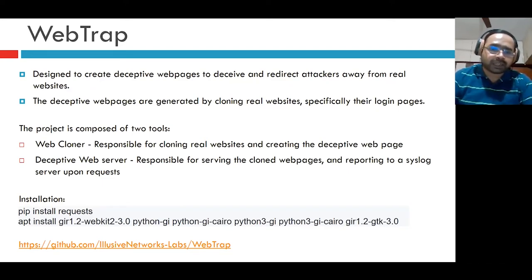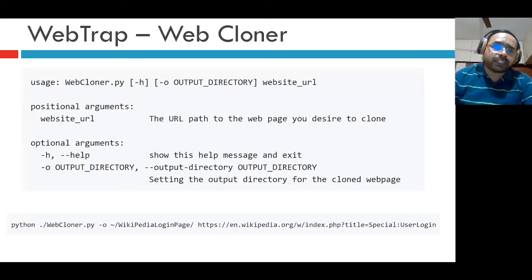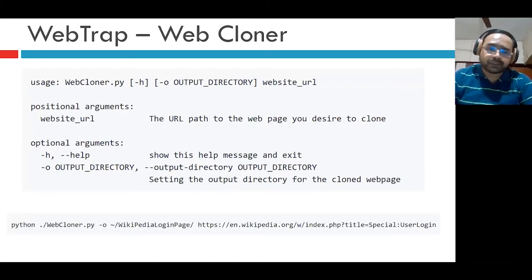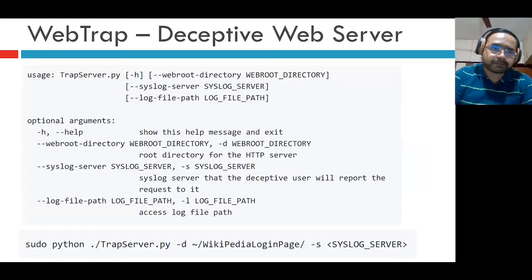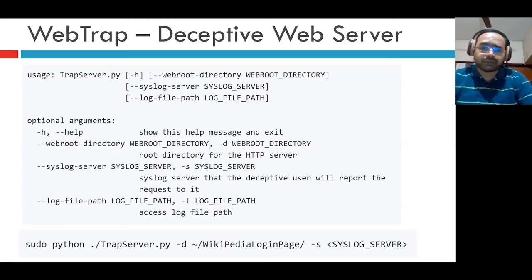To install, you can follow the commands — it also mentions the required dependencies. To clone a login page, you use the webcloner.py file using the syntax shown. Here we are cloning Wikipedia's login page and storing it in the Wikipedia login page folder. The trap server, server.py, serves the files from that folder — it's the cloned login page. When somebody tries to access this cloned login page, it sends the information to the syslog server.